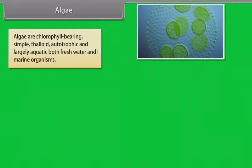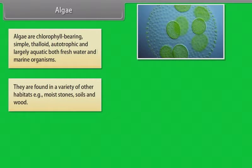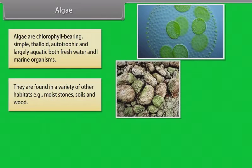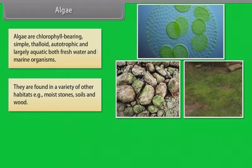Algae. Algae are chlorophyll-bearing, simple, thalloid, autotrophic, and largely aquatic, both freshwater and marine organisms. They are found in a variety of other habitats as well. Example: moist stones, soils, and wood.